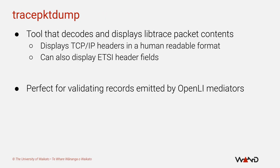The most useful libtrace tool will be trace_packet_dump, which you can think of as the libtrace version of the 'dump all packets to the terminal' feature from tcpdump. trace_packet_dump will decode all fields within the TCP/IP headers of a captured packet and print them to your terminal in a human-readable format. On top of that, trace_packet_dump also knows how to decode and display the LI-related fields inside the ETSI headers, so it can validate not just that the correct packets are being captured but also that they've been tagged with the appropriate metadata required by the ETSI standards.